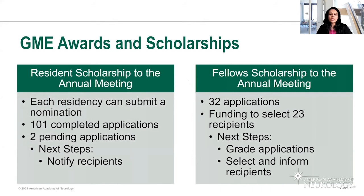For awards and scholarships: we have a resident scholarship and a fellow scholarship to the annual meeting. We currently have 101 completed applications, with two pending while we wait for program director letters of recommendation. In the next day we'll be sending emails to recipients notifying them they've received the scholarship and registering them for the annual meeting, or reimbursing if they've already registered.